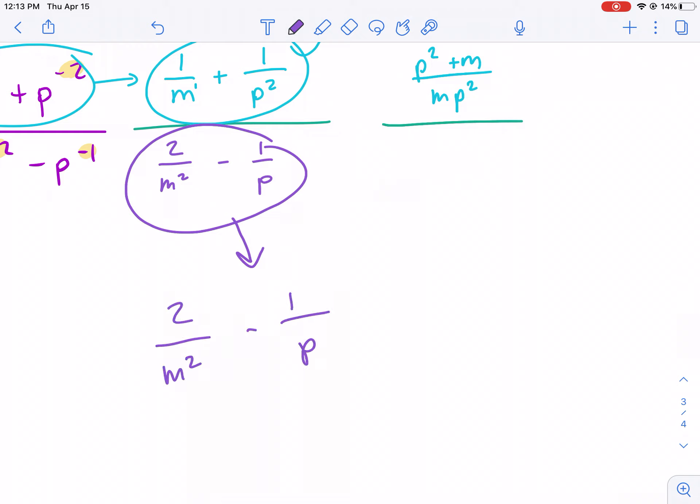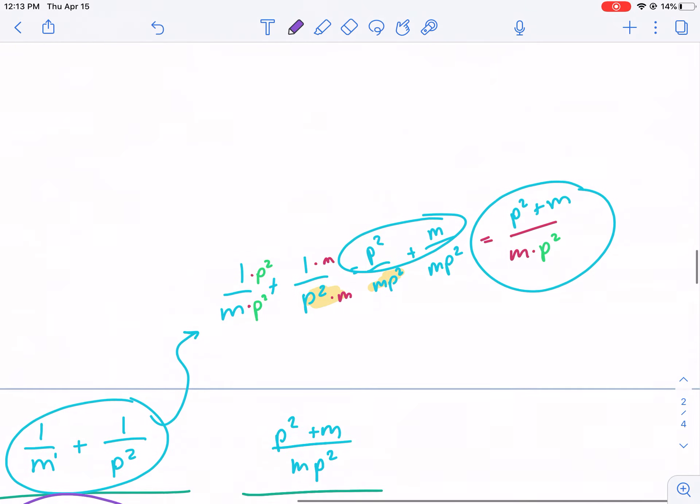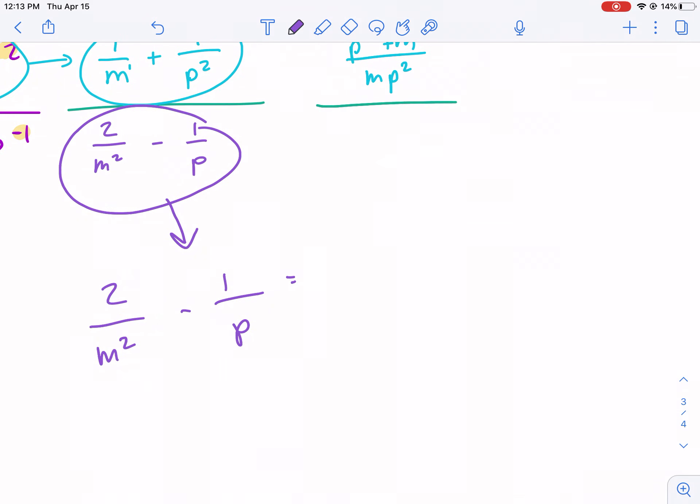We need to find a common denominator with this as well. Now, common denominator, you can always find one. It might not be the least common denominator, but you can always find one by multiplying the two denominators together. So I know my denominator is going to have m squared p in it.